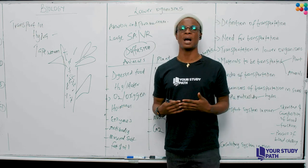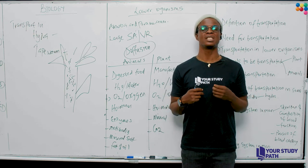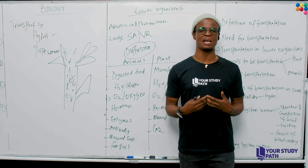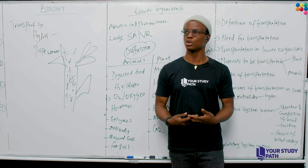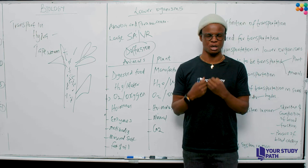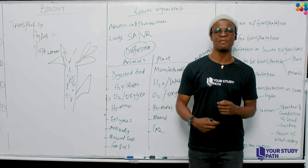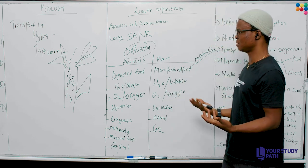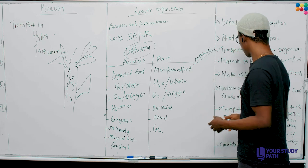For tapeworm, it has a soft body layer, making it easier for materials to get absorbed into its body. Insects like cockroaches also undergo this type of transportation, where it is easier for them to take in materials into their body cavity through what is called the haemocoel. Materials come into their body and eventually leave. That is how transportation is done in simple multicellular organisms.